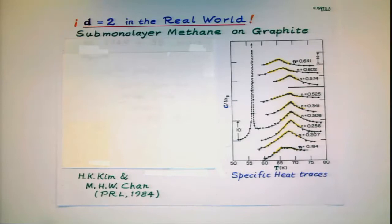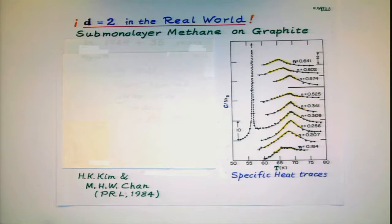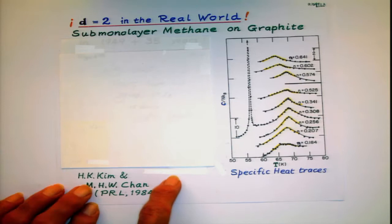So now the question is, this is all very well, but might there be some actual verification of this? In other words, this is supposed to be for a two-dimensional lattice gas. Where might you find a two-dimensional lattice gas? Most people think of gases as intrinsically three-dimensional. But if I condense methane onto graphite and have a sub-monolayer of it, then that essentially is a lattice gas. And so you might say, can we not verify this? And it turns out that that's not the easiest thing.